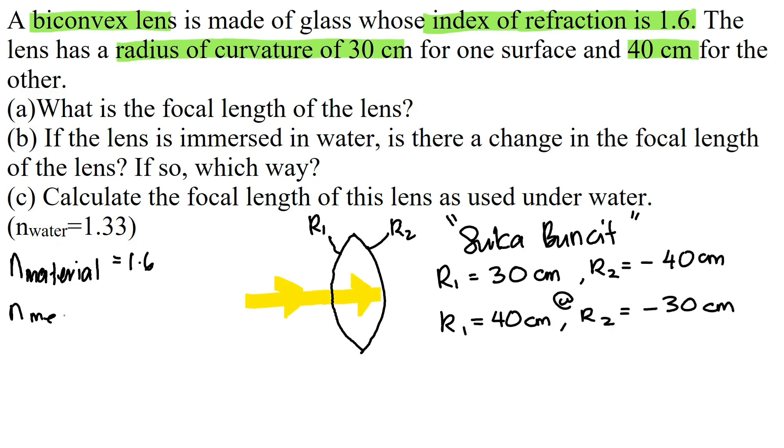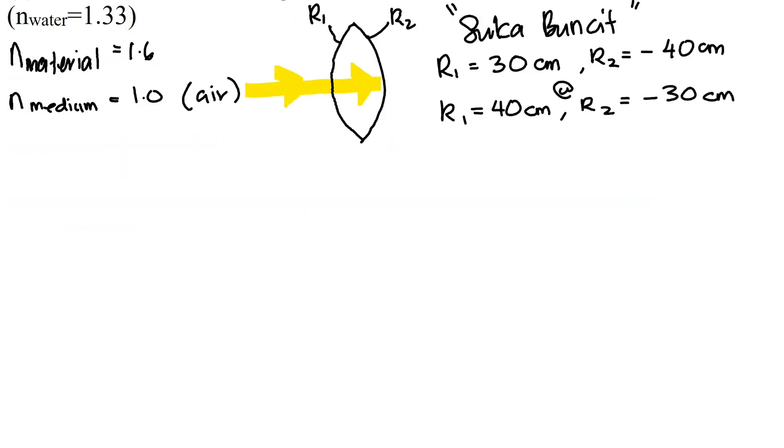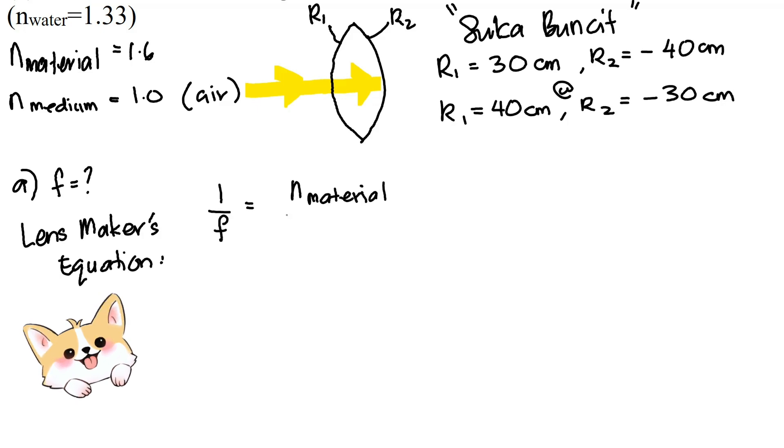So the medium is air. So I'm going to put 1.0 as the refractive index. Now let's find the focal length. We are going to use the lens maker's equation for this one. 1 over f equals to the refractive index of the material over the refractive index of the medium, minus 1, times 1 over R1 minus 1 over R2.